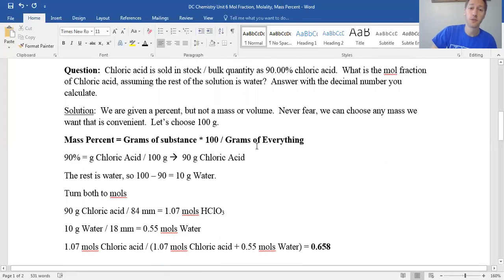Now the question here for us, chloric acid is still sold in stock, bulk, 90% chloric acid. So it's pretty concentrated. Generally, I buy stuff in bulk too, in high concentrations, then I just dilute it down to a safe concentration for the labs. So what is the mole fraction of the chloric acid? Assuming the rest is water. And we're going to answer as a decimal.